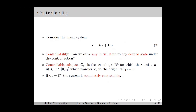To discuss controllability, we are considering the linear system as defined in equation number 3. Controllability can be considered as the ability to transfer the system from any initial state to any desired state using finite control inputs. It is basically a property related to the actuators of the system and can be considered as the ability of the actuators to influence the system completely, which means on each state variable.